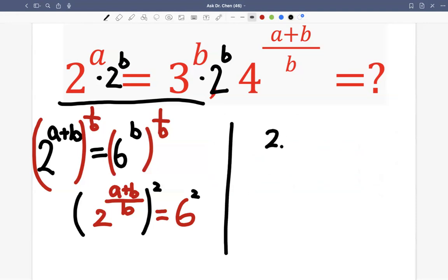So we can write it as two squared, then raised to a plus b divided by b. And then equals to six squared. So that's four. Two squared is four. So four to the a plus b divided by b.